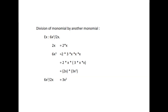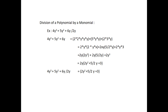Next, we will see about division of a monomial by another monomial. Consider the example 6x³ divided by 2x. We know 2x equals 2 into x, and 6x³ equals 2 into 3 into x into x into x. Grouping the factors: 6x³ equals 2 into x into 3 into x into x, which equals 2x into 3x². Therefore, 6x³ divided by 2x equals 3x².